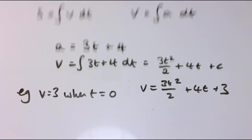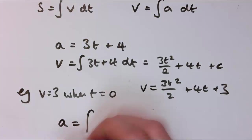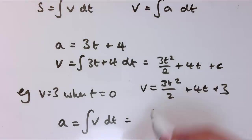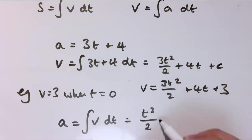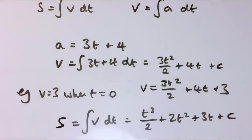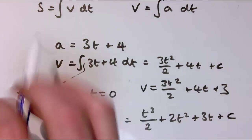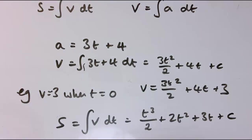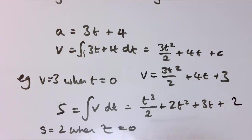Then to get the displacement, I integrate the velocity with respect to time, giving t³/2 + 2t² + 3t plus another constant. Similarly, if told that s = 2 when t = 0 — it's always easier when t = 0 because all other terms vanish — then that constant equals 2, giving my displacement formula.